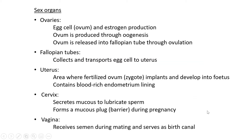Now let's look at the functions of these sex organs. The ovaries produce egg cells — the other name for an egg cell is an ovum — and they produce estrogen, the female hormone that gives female characteristics. The ovum is produced through the process of oogenesis, which is basically the production of your egg cell. The ovum is then released into the fallopian tube through the process of ovulation, which is the middle step of oogenesis.